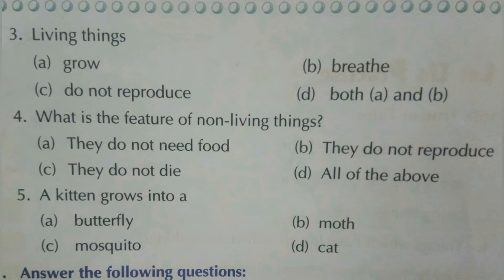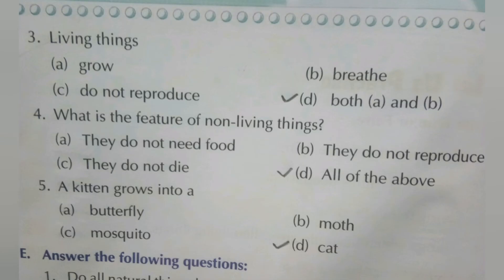Third MCQ: living things — A: grow, yes; B: breathe, yes. C: do not reproduce — no, since living things do reproduce. D: both A and B — yes. Select D because both A and B are correct. Living things grow as well as breathe.